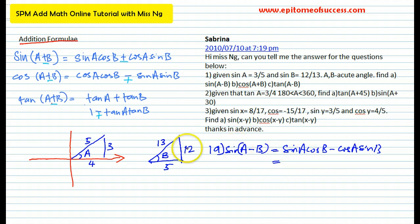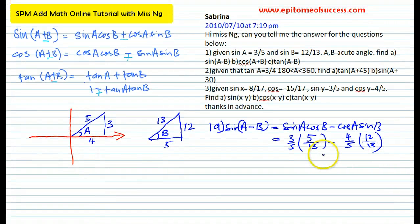Now, all you do is substitute from the relevant information from the triangle. Sine A is 3 over 5, times cos B, cos B is 5 over 13, that's 5 over 13, minus cos A, cos A is 4 over 5, so that's 4 over 5, and sine B, sine B is 12 over 13. What you have done is substituted the values from the relevant triangles that you've drawn from the information given, and then just press your calculator to get your final answer.